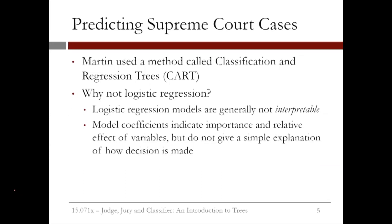Martin used a method called classification and regression trees, or CART. In this case, the outcome is binary: will the Supreme Court affirm the case or reject the case? He could have used logistic regression for this, but logistic regression models are not easily interpretable. The model coefficients in logistic regression indicate the importance and relative effect of variables, but do not give a simple explanation of how a decision is made. In this lecture, we'll discuss the method of CART and a related method called random forests, and see if these methods can actually outperform experts in predicting the outcome of Supreme Court cases.